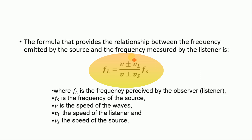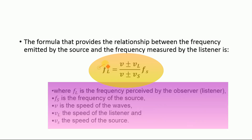FL equals (V plus or minus VL) divided by (V plus or minus VS), multiplied by FS. FL is the frequency perceived by the observer or listener. FS is the frequency of the source — in our numerical, FS is the frequency produced by the siren of the police vehicle. V is the speed of the sound wave, and the speed of sound in air at 20 degrees Celsius is approximately 343 meters per second. VL is the speed of the listener.